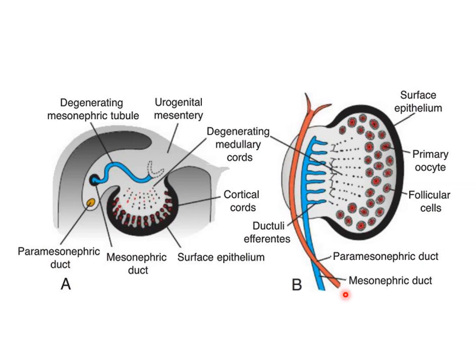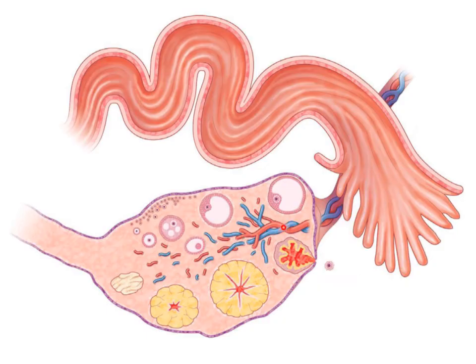As the ovary develops further, we can see the ovary containing follicles, the fimbria and the uterine tube, the suspensory ligament of the ovary, and the ligament of the ovary proper.